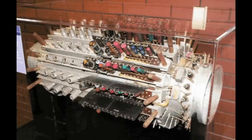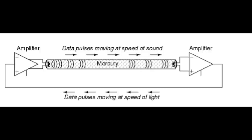Before core memory was invented, computers used things like delay line memory, where basically it was a set of springs in a mercury bath. A transducer would send signals — zeros and ones — through the springs, which would then take time to propagate acoustically through the springs, where they would then come back out and be reinserted into the delay line.